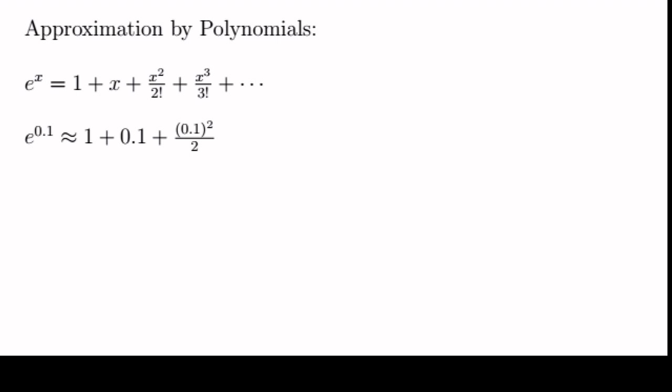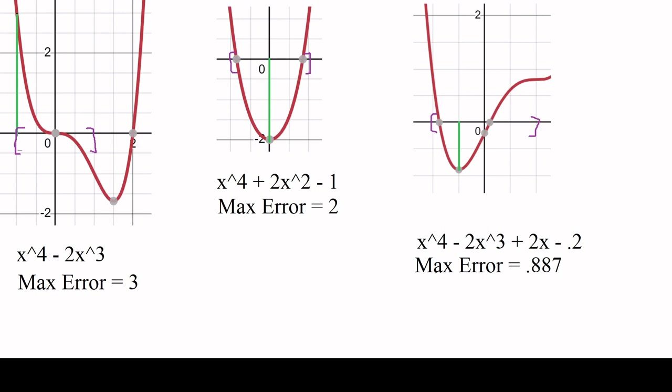But we're always looking for other ways to build approximations more efficiently, and one way is by using the Chebyshev polynomials. Informally, Chebyshev polynomials are the flattest monic polynomials of a given degree. Suppose you're writing a program where you use fourth degree monic polynomials to estimate between -1 and 1. Which one would be the closest to zero? We can see a few examples here. The error at any point is represented by the vertical distance from zero, with the boundaries of the domain marked in purple. The maximum errors marked with green vertical lines are 3, 2, and 0.887 respectively. Can you beat these scores?